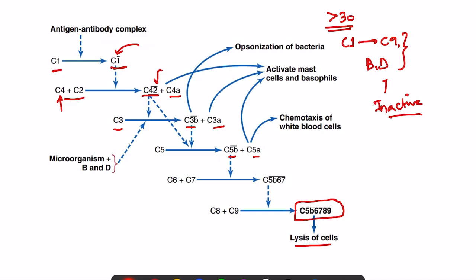The activation is mostly in numerical order; however, C4 and C2 come before C3. This is because they were named in the order of their discovery, not activation. Despite this, the sequence is still relatively simple to remember. There are also certain characteristics of this complement activation.